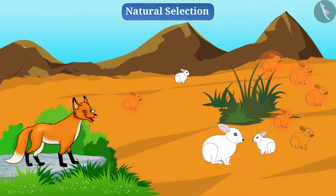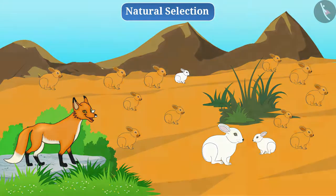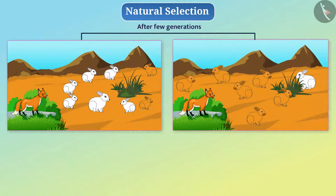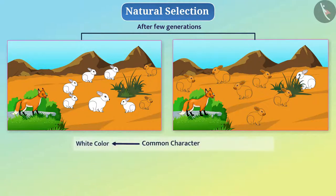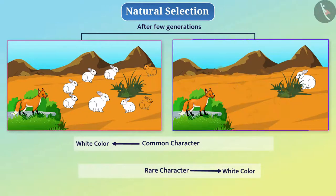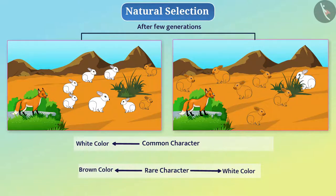Conversely, brown rabbits remain hidden from the fox, so more brown rabbits will become available for breeding and their population increases. After a few generations, the number of white rabbits will be much less than the brown rabbits. In this way, white color that was initially a common characteristic in the rabbit population became the rare characteristic.